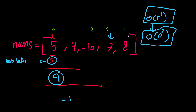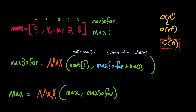Now, how can we go from O(n²) to O(n) linear time? If we want linear time, we can only move through the array once from left to right — one for loop. I have created two variables: max_so_far, which tracks the maximum subarray sum achievable so far, and max, which is the final answer we return — the confirmed maximum sum we will return at the end.